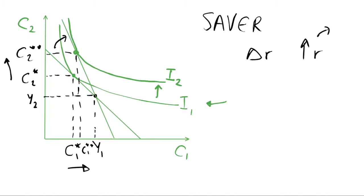If we increase the interest rate, we are effectively making consumption in period one more expensive — here we think of the interest rate as the price of c1 consumption. If we are borrowing to finance consumption in period one and we increase the interest rate, we are increasing the cost of borrowing that money. When we're saving the same is true, just a bit less intuitive — we're getting more value from saving, so we can interpret it as decreasing the price of consumption in period two. By saving we can increase the amount we can consume in period two.